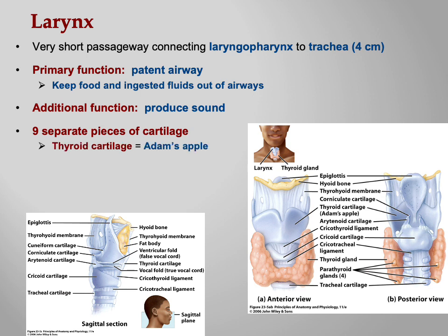There are nine separate pieces of cartilage. The thyroid cartilage is what people call the Adam's apple — it's the big shield. Look at the illustration: it's a huge shield that protects the front of your throat. Notice the thyroid cartilage is large in front but disappears on the posterior side. The cricoid is right below it, with the cricothyroid ligament in between. The cricoid is a small band in front but becomes a huge chunk of cartilage on the back side.